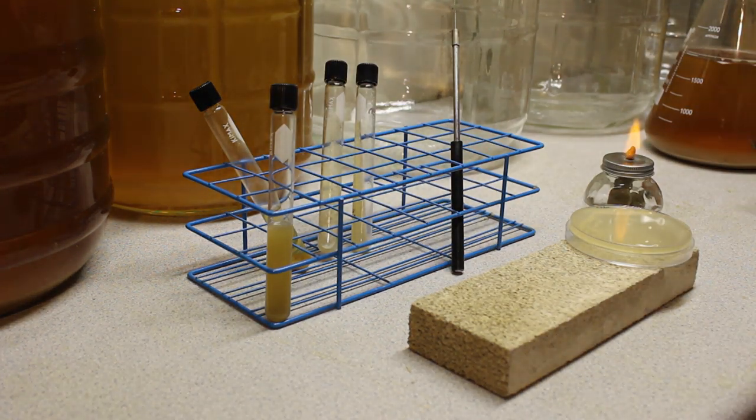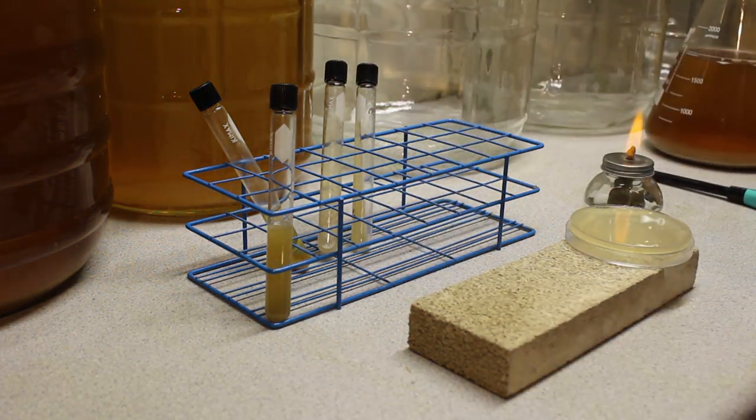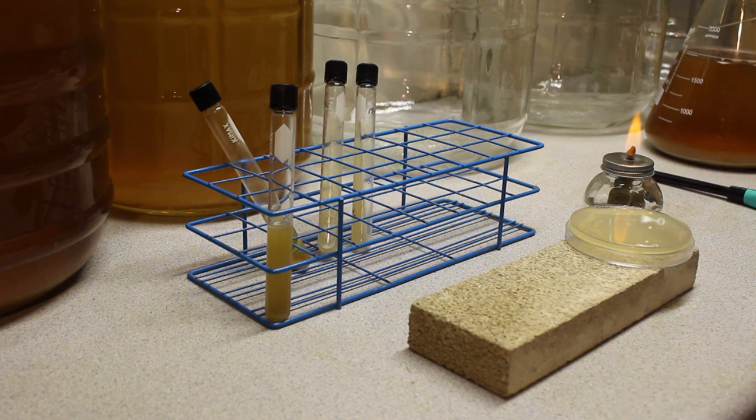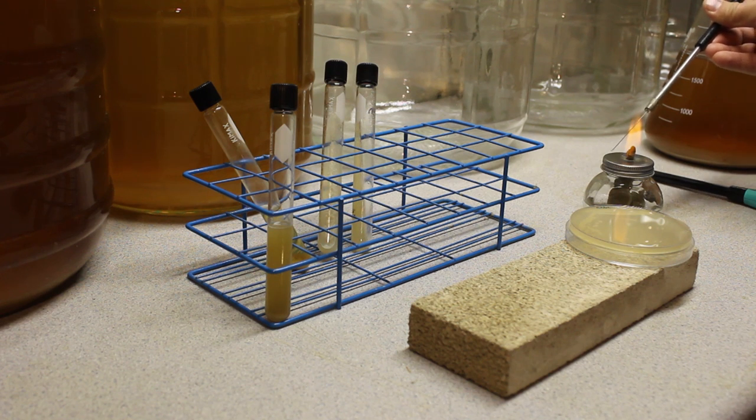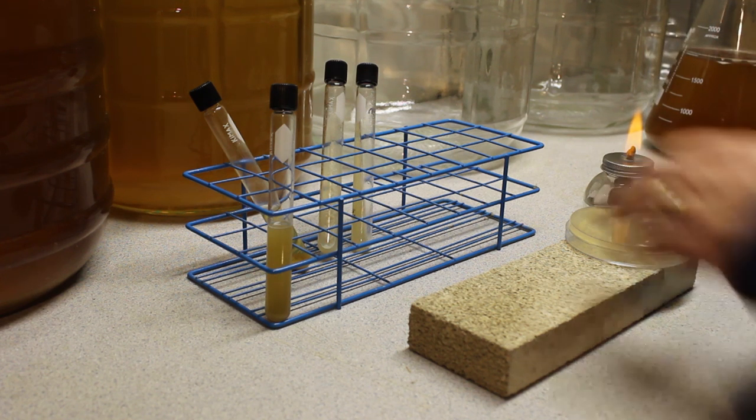So to start, what we want to do of course is light our lamp, and the first thing we need to do is to sterilize our loop. I show how to do this in my aseptic methods video, but basically you want to heat the entire length of that wire in the flame to red hot and that'll be sterile.